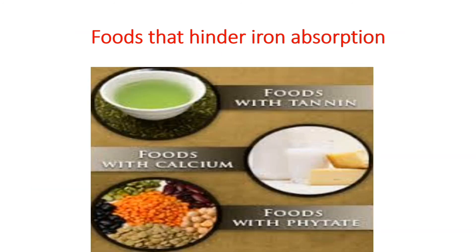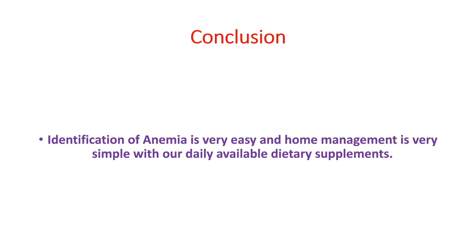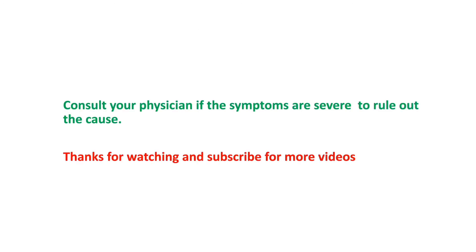Now we will see the foods that hinder iron absorption. Foods with tannin, foods with calcium, and phytate hinder the iron absorption process, as these substances bind with iron and cause a decreased absorption rate. Identification of anemia is very easy and home management is very simple with our daily available dietary supplements. Consult your physician if the symptoms are more severe and persisting, to rule out the causes.